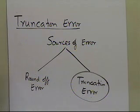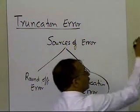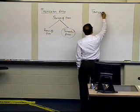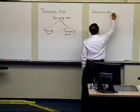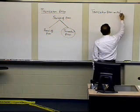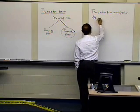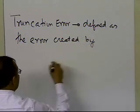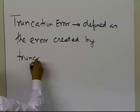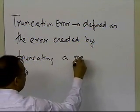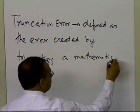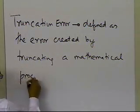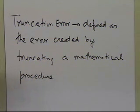So in this segment, we're going to talk about what it means when we say we are having a truncation error. Truncation error is defined as the error created by truncating a mathematical procedure.